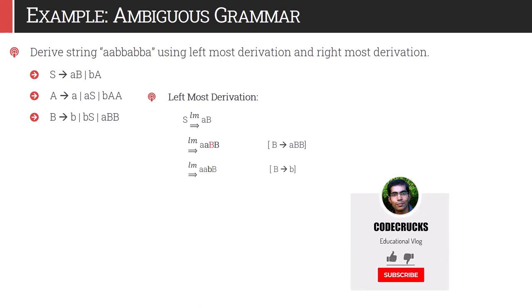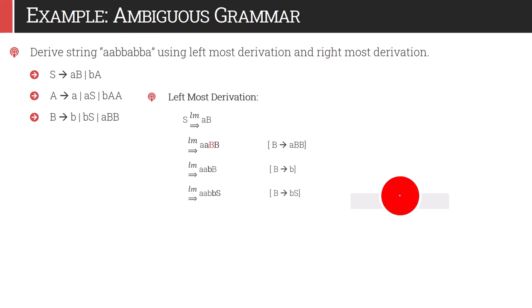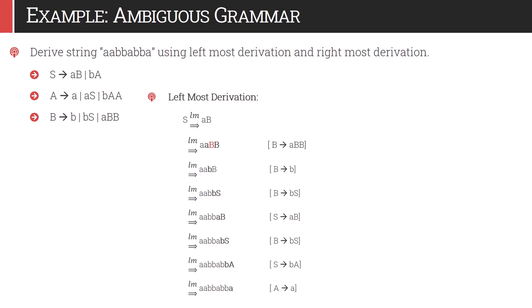In the next step we replace that capital B by small b, giving double a small b capital B. At the next level, capital B is replaced by b and capital S, then S is replaced by ab, then that b is replaced by bS, and S is replaced by ba, and finally a is replaced by small a, giving us the desired string. Now let us see if rightmost derivation is possible. Using rightmost derivation, S gives aB — RM indicates rightmost derivation — and that B is replaced by double b.